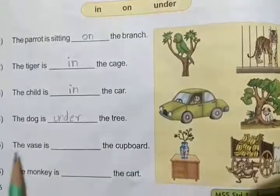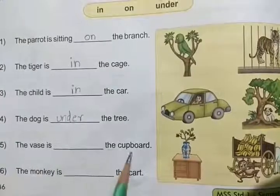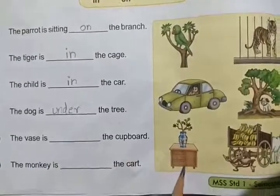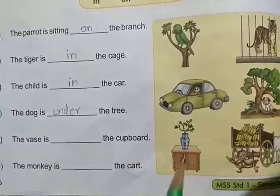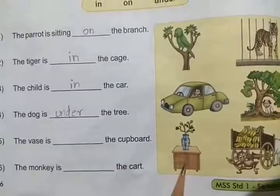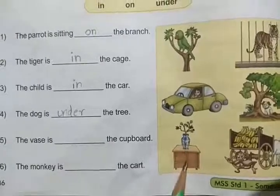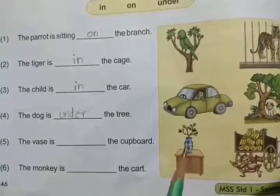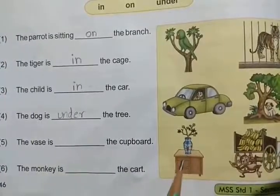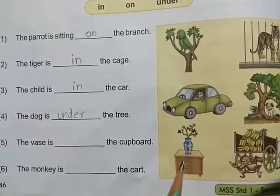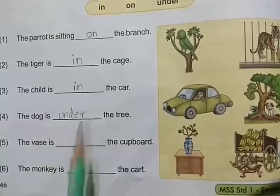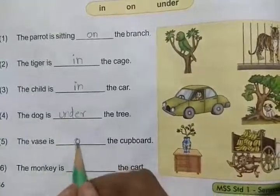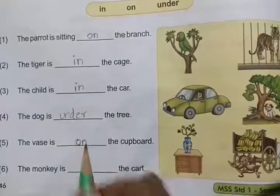Fifth one: The vase is dash the cupboard. This is the vase, and this is the cupboard. Tell me — the vase is dash the cupboard. On the cupboard. Very good — O-N, 'on'.